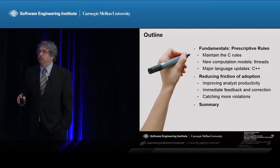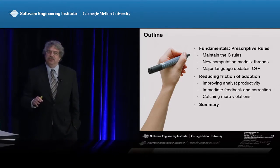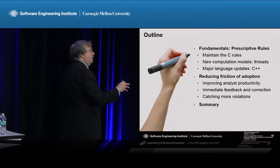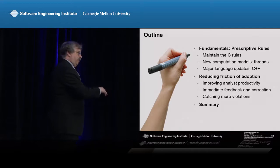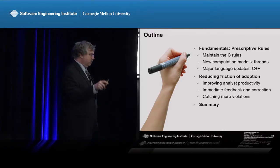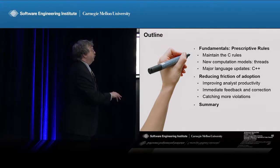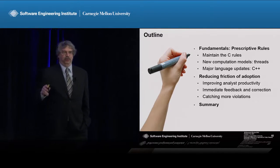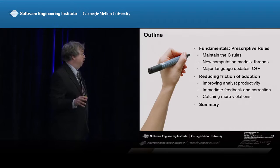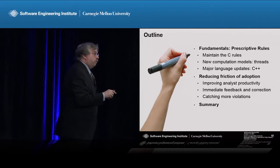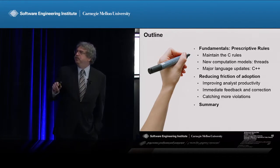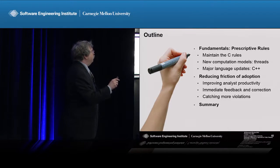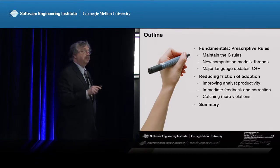Having rules by themselves is usually not good enough. You can tell people to do these things, and these rules number — depending on which version you look at — tens, fifties, hundreds. To expect programmers to remember all hundred rules and apply them consistently is a challenge. So the other part of the work is how to reduce the friction of adopting these rules — how can we make them accessible so they actually get put into practice?